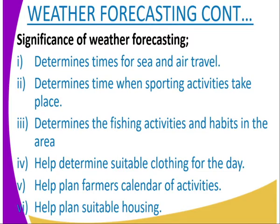The second significance is that it determines the time when sporting activities take place. For example, we have skiing and skating. Skiing and skating cannot be done during summer, because there is no snow. We time these activities for winter or when temperatures are low. The third significance is that it determines fishing activities in the area. Especially when it comes to fishing competitions, they cannot be done during the rainy season — they are done when it has been forecasted to be sunny.